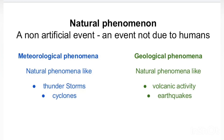There can be two types of natural phenomena. The first are meteorological phenomena, which include events like thunderstorms or cyclones - these are not related to the earth's surface. The second are natural phenomena which are related to the earth and earth's surface; these are called geological phenomena, like volcano eruptions and earthquakes.